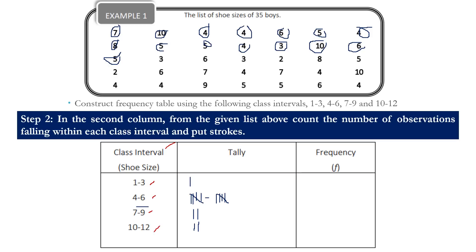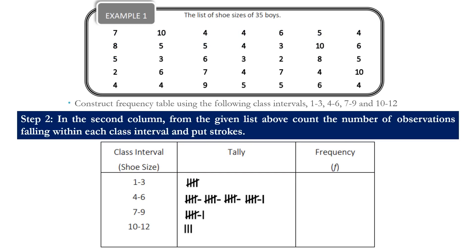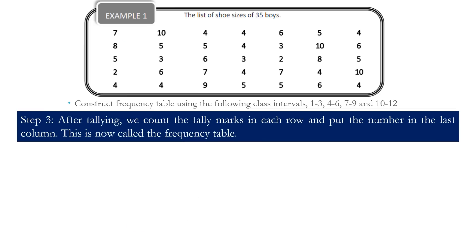When we are finished putting strokes in each class interval, we will have this result. So that is how the tally looks. We can now proceed to step 3. After tallying, we count the tally marks in each row and put the number in the last column. This is now called the frequency table.